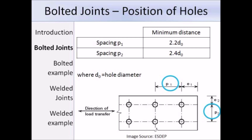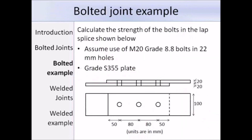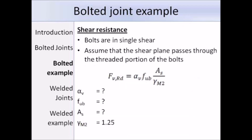That completes the overview of bolted joints, and next there is a worked example. We have a lap splice and we are asked to work out the strength of the bolts. We are assuming M20 grade 8.8 bolts in 22mm holes, and the plate is grade S355 steel. The diagram also gives the spacing, end and edge distances which we will need to use. The first thing we need to do is work out the shear resistance using the expression from Table 3.4. We are assuming that the bolts are in single shear and that the shear plane passes through the threaded portion of the bolts.